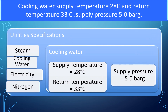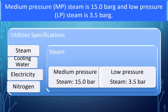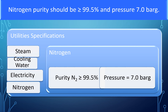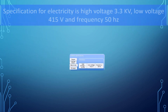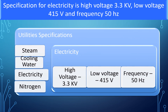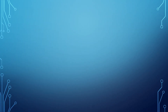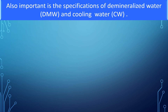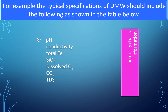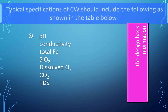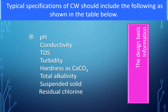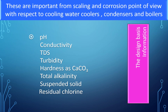Cooling water supply temperature is 20°C, return temperature 33°C, and supply pressure 5 bar g. Medium pressure steam is 15 bar g and low pressure steam 3.5 bar g. Nitrogen purity should be ≥99.5% at 7 bar g. Electricity specification: high voltage 3.3 kV, low voltage 415 V, frequency 50 Hz. Also important is the specification of demineralized water and cooling water — typical specifications for both should include parameters relevant to scaling and corrosion with respect to cooling water coolers, condensers, and boilers.